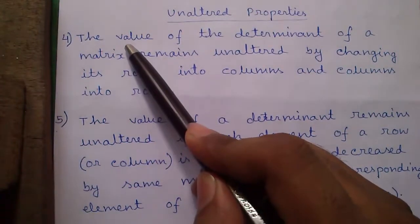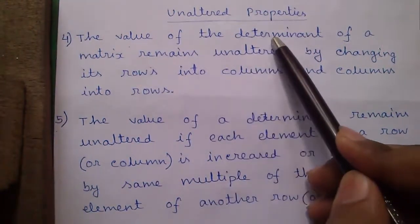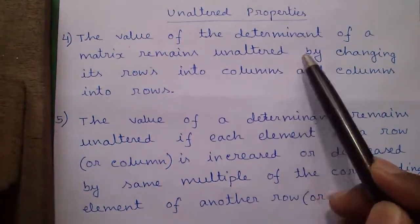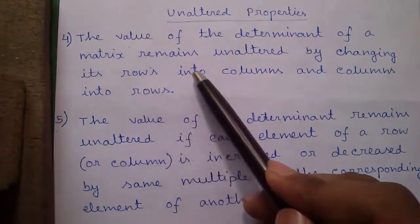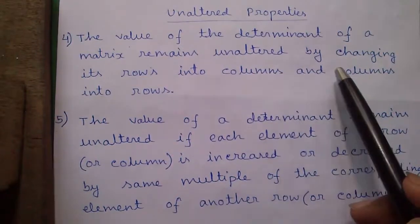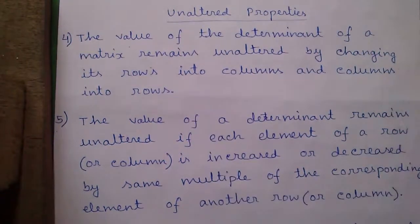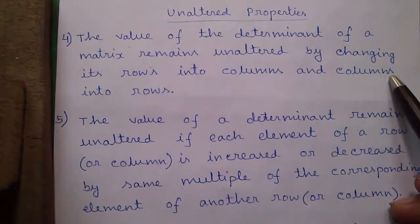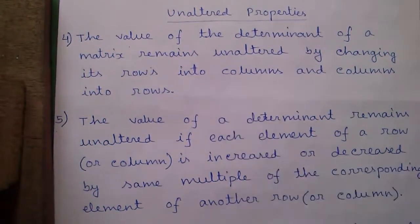Fourth property: the value of a determinant of a matrix remains unaltered or unchanged by changing its rows into columns and columns into rows. The process of interchanging rows into columns is called transpose of a matrix.